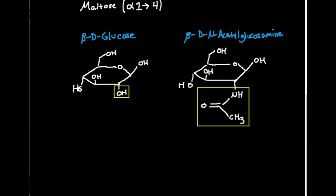Before we go into chitin, I want to do a little comparison. What you see here on the screen on the left is beta-D-glucose. Hopefully you'll see glucose enough to where you'll be familiar with what it looks like. Beta-D-glucose: if you start with the anomeric carbon, the OHs go up, down, up, down, and this hydroxymethyl goes up.